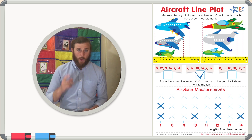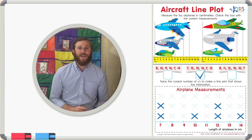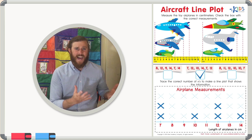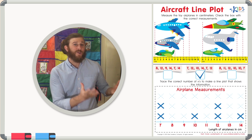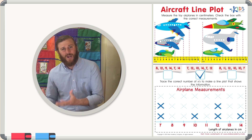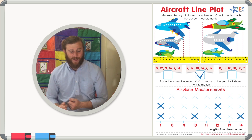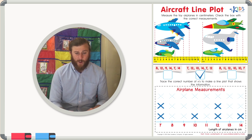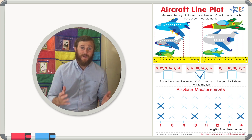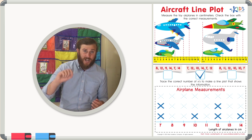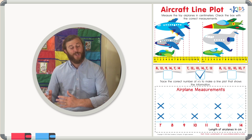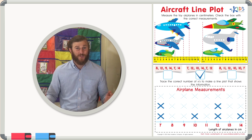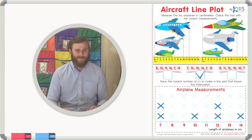Remember: when making a line plot, be careful to transfer the data from your data set onto the line plot accurately. You can do this by putting your numbers in order first to make sure you've checked off each number. That's it — thanks for watching boys and girls, and we'll see you next time.